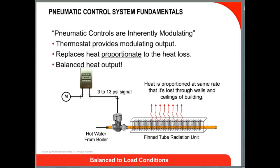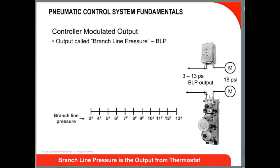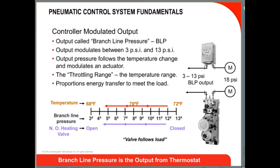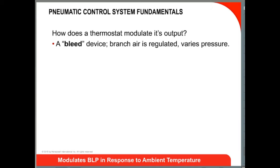All pneumatic controllers function this way. The modulating output pressure of a controller is called the branch line pressure, or BLP. This output pressure varies as the sense temperature varies — as space temperature increases and decreases, so does the branch line output pressure. The range of temperature through which the valve or damper is modulated is called the throttling range, and it allows us to proportion energy to meet the load, adding heat to the building at the same rate it is being lost.